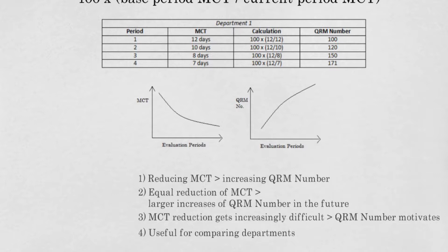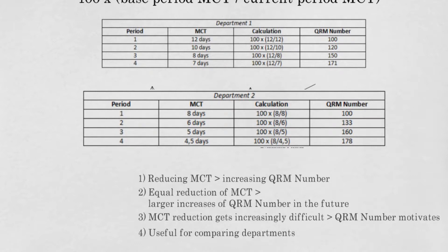To explain this, I show you another example of MCT and QRM numbers which can be seen as the calculations of another department within the same organization. In the second department, MCT also decreases. However, based on the amount of days, you are not able to see which department did a better job. Therefore, you need to look at the QRM numbers. As you can see, the second department achieves a higher QRM number with less MCT reduction.